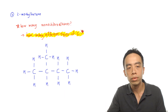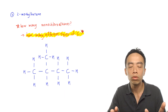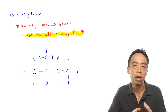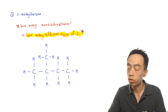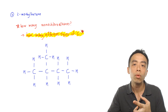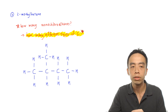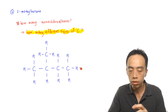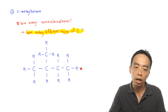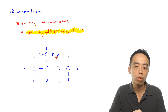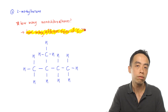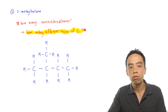Now for the second example — 2-methylbutane. We want to do two things: first, determine how many different types of mono-substituted product we will get; and second, determine the expected ratio of these products. 2-methylbutane has a four-carbon chain with a methyl group attached at position 2. All the hydrogens are drawn out to make it easier to count them later.